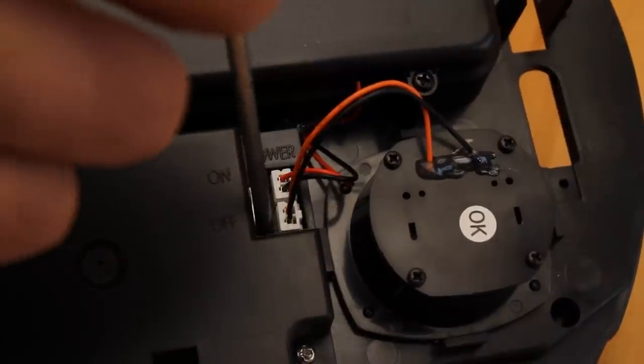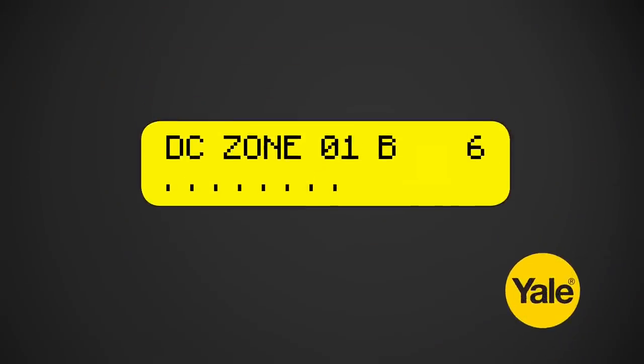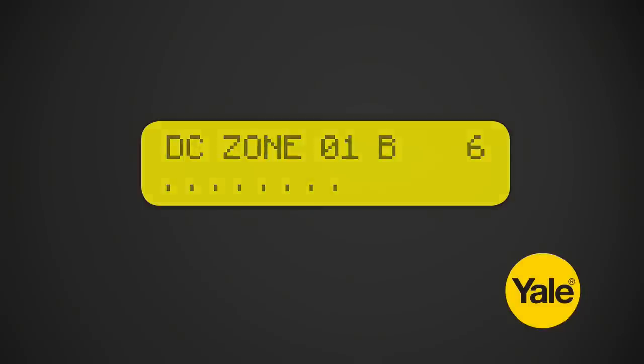Slide the switch to the ON position inside the siren and press the test button. If the sensor signal reached the control panel, the screen will briefly display a message like this. The radio signal strength is shown by a number in the upper right corner of the display. Please note, the number ideally needs to be 5 or more for optimal signal performance.